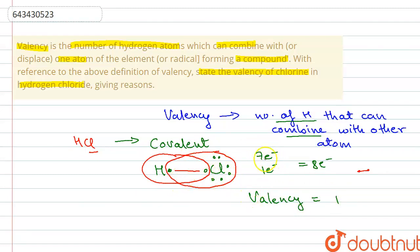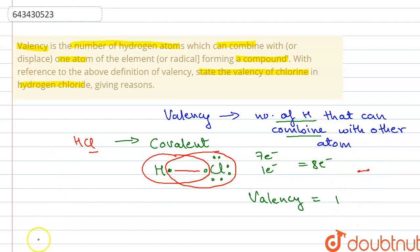In another way, chlorine already had seven electrons and required one more electron, which was shared by hydrogen, making it eight electrons for noble gas configuration. So the valency of chlorine in hydrogen chloride is one.